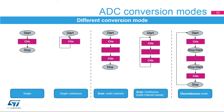The ADC supports several conversion modes. Single mode converts only one channel in single-shot or continuous mode. Scan mode converts a complete set of predefined programmed input channels in single-shot or continuous mode. Discontinuous mode converts only a single channel at each trigger signal from the list of predefined programmed channel inputs.